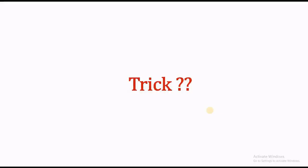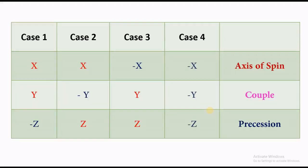Do we have any crosscut method to assess the directions of these rotations without applying any rules? Yes, we do. Look at this table. The first row represents the axis of spin, second row the couple due to weight of the object, and the third row represents the axis of precession. Wherever you see a negative sign, it represents clockwise direction.